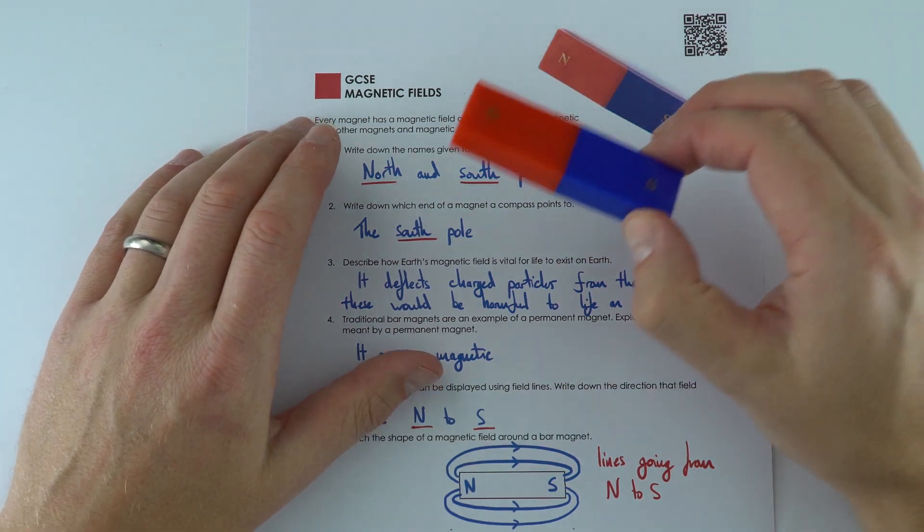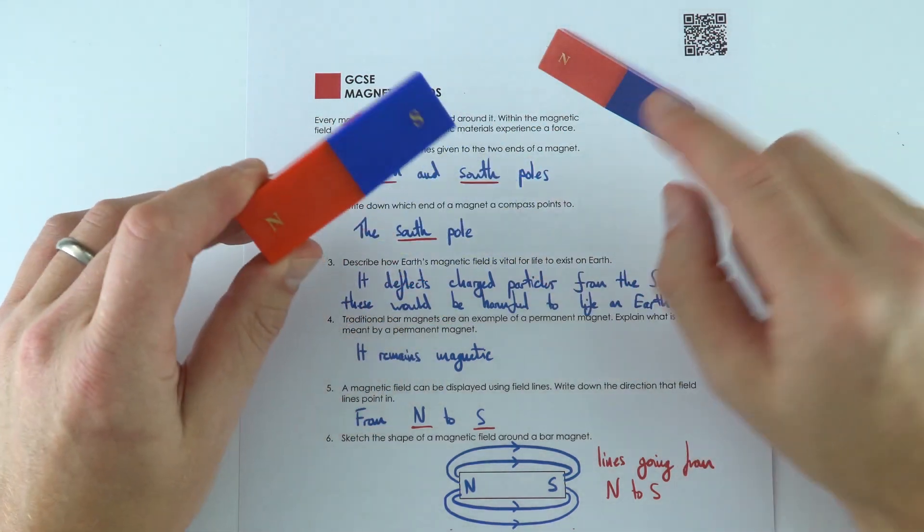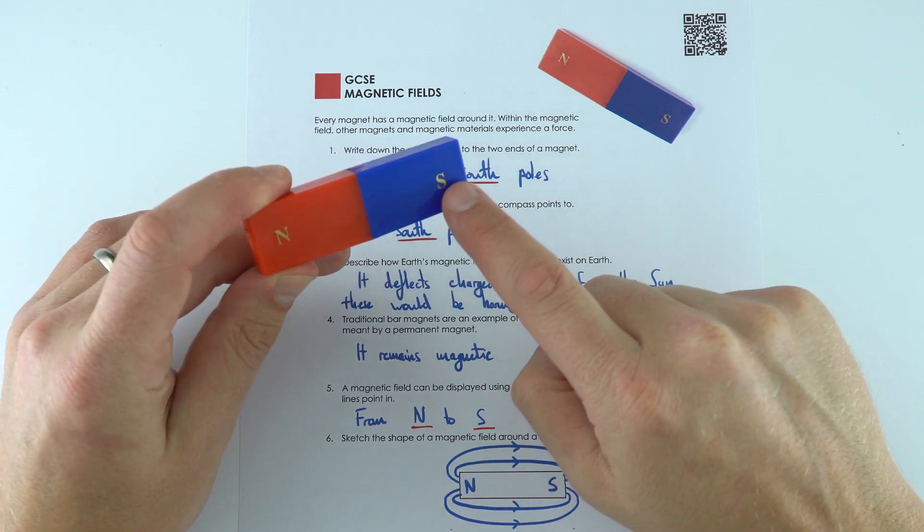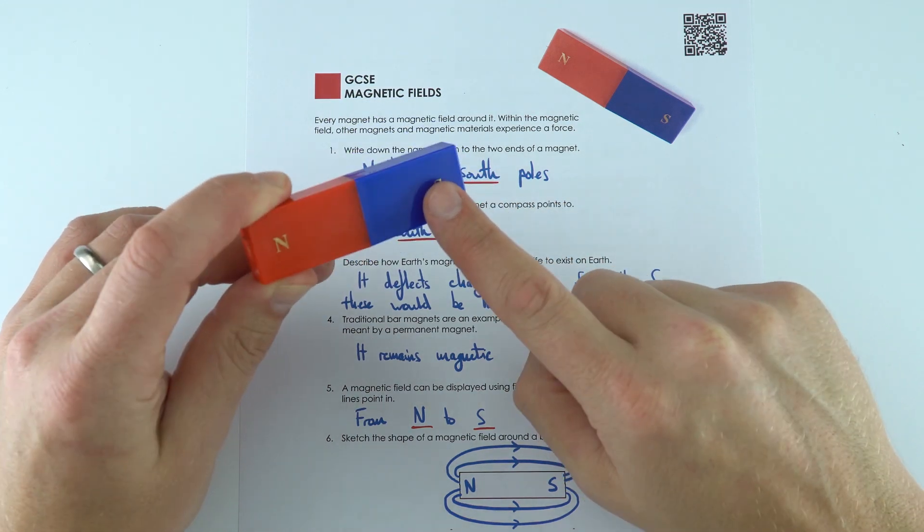Everybody loves playing with magnets and we have a north and a south end. In actual fact it's the north point on a compass pointing to the south end of a magnet.